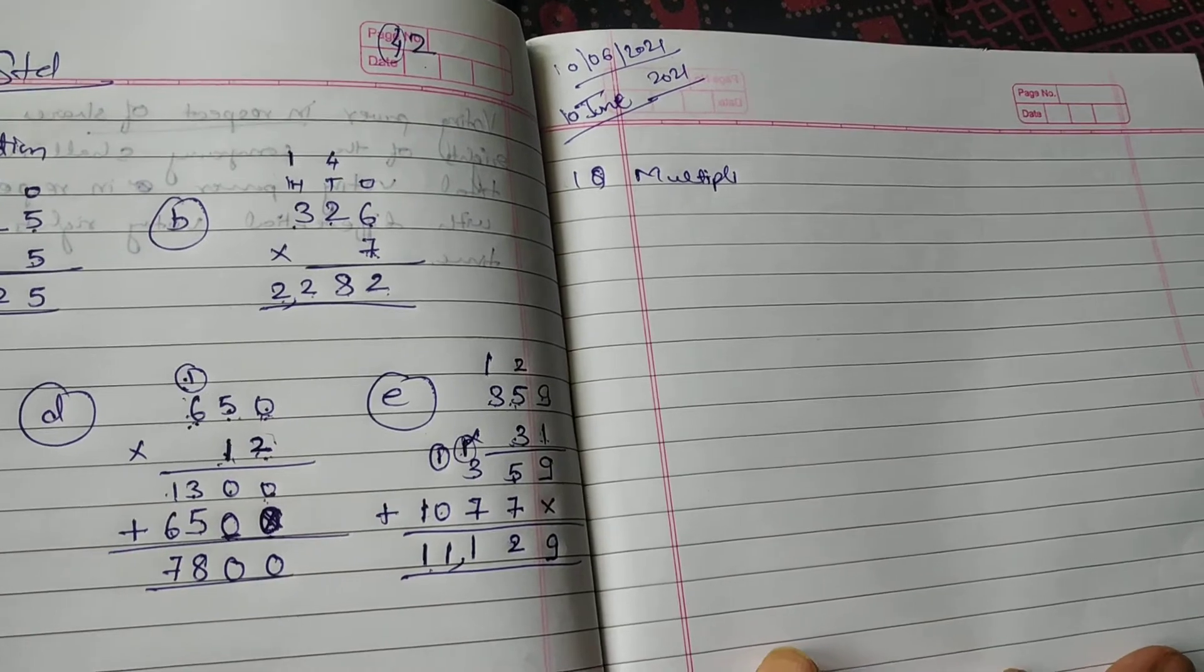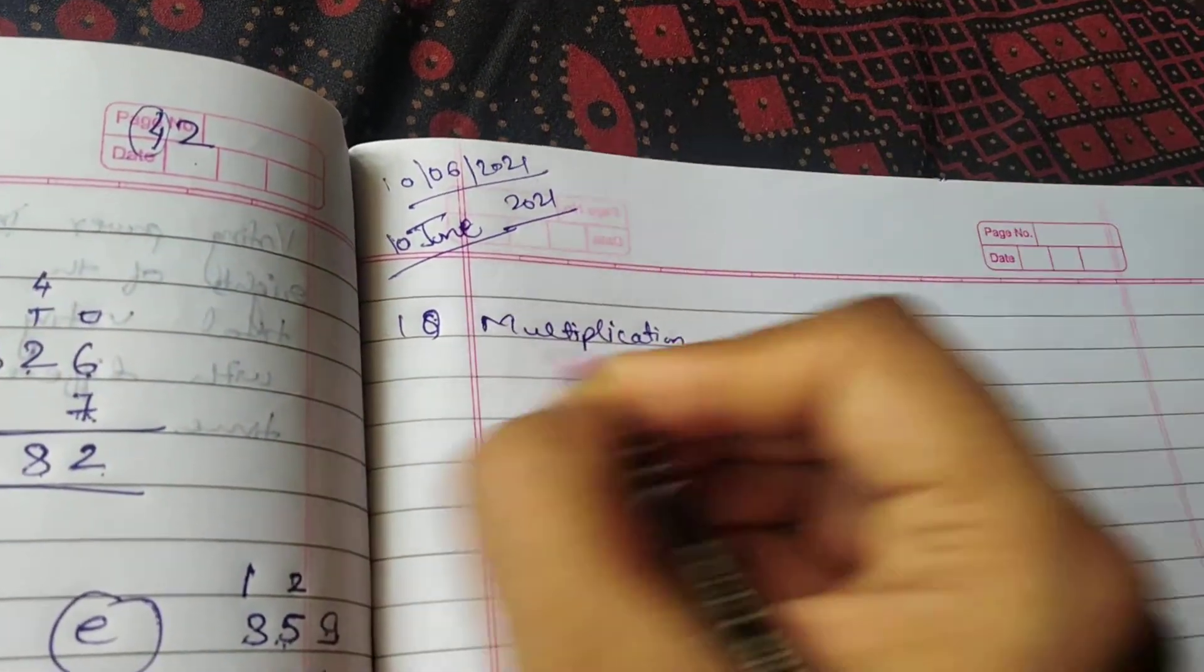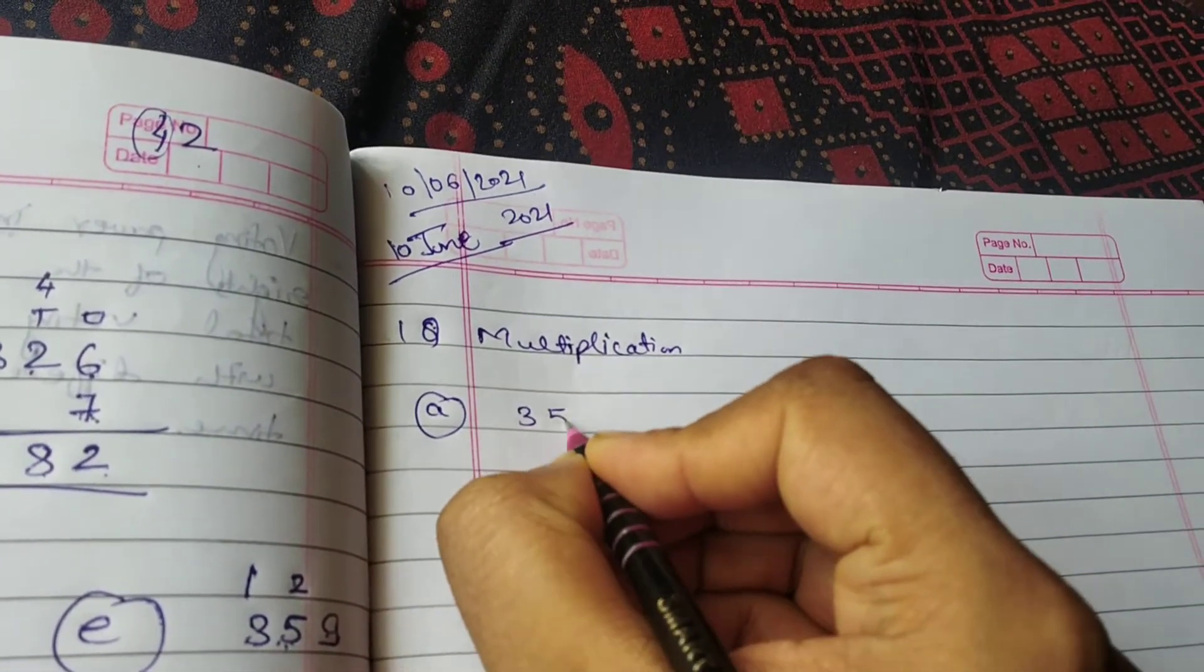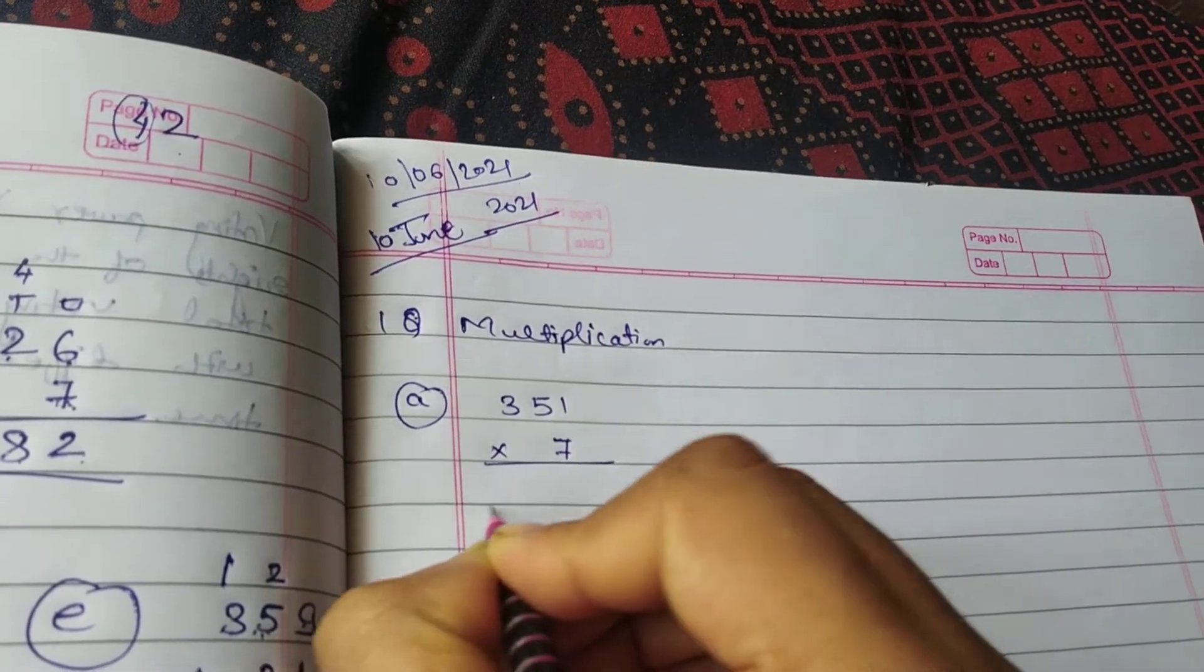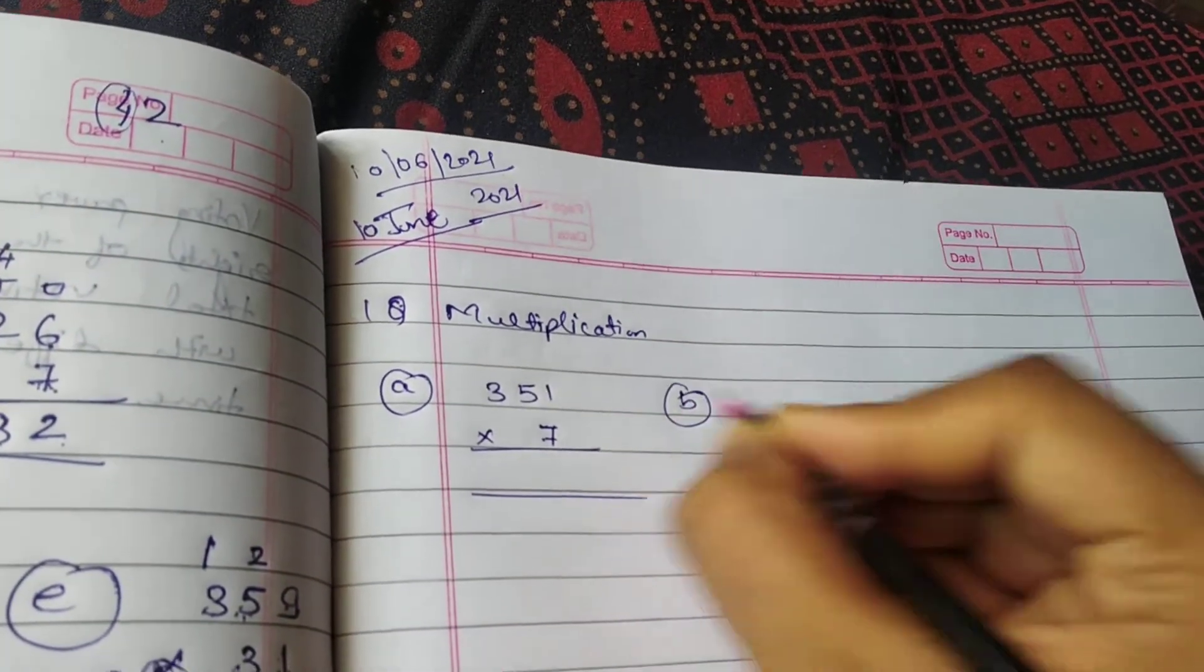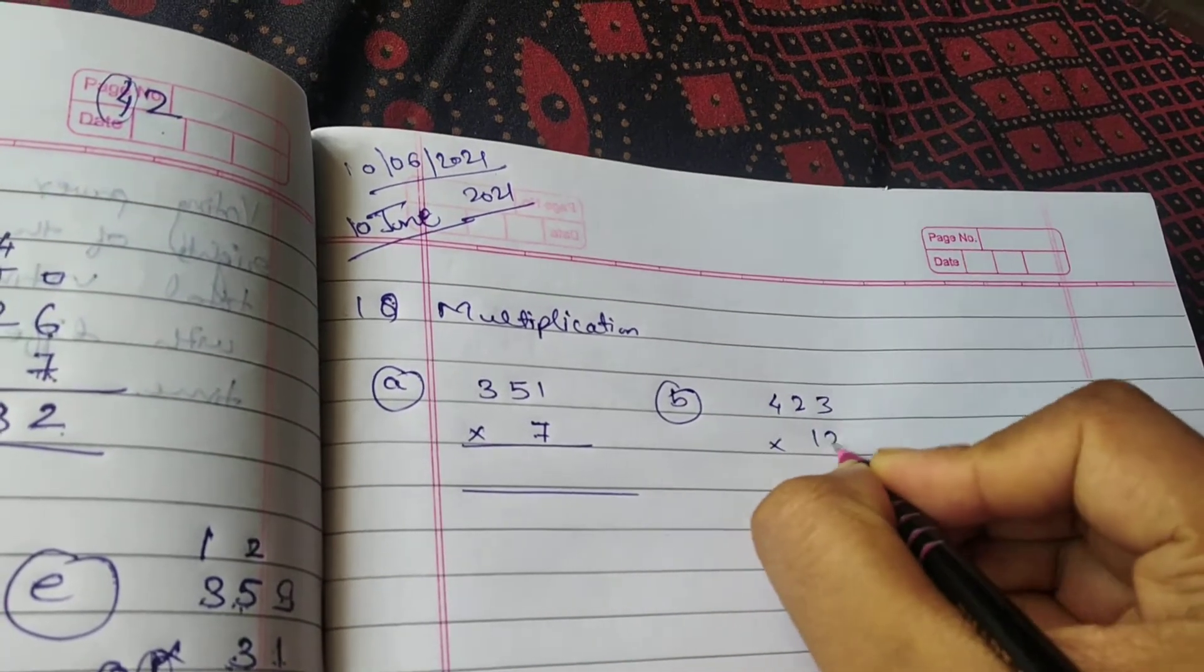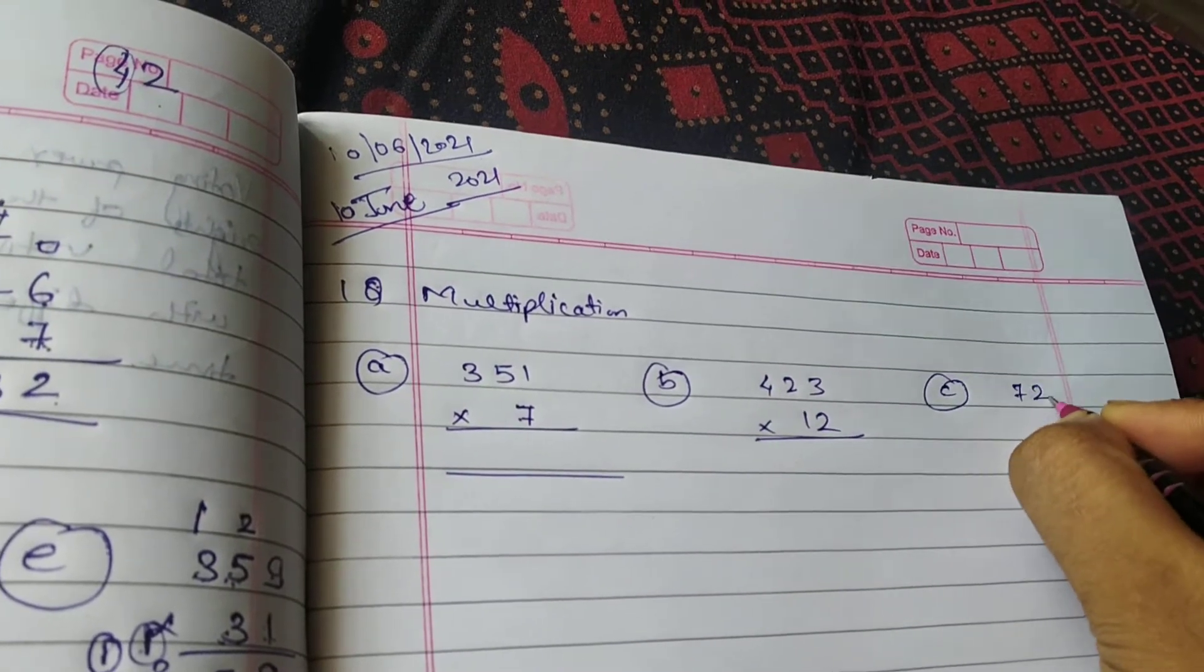Okay, so multiplication I am giving you a few questions. Okay, for example 351 multiply by 7. Okay, sirf one digit ka number. Now next is 423 multiply by 12. Okay, C 721 multiply by 32.